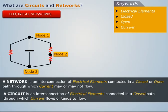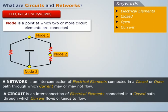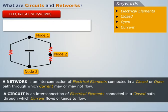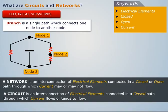In any electrical network, a node is a point at which two or more circuit elements are connected. In this network, there are three nodes. Similarly, a branch is a single path which connects one node to another node. In this network, there are four branches.